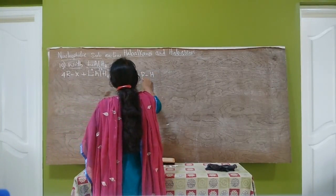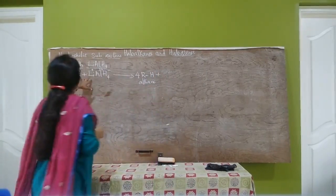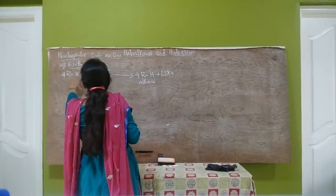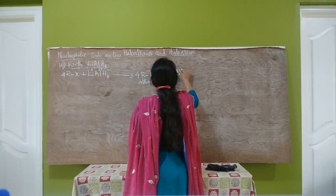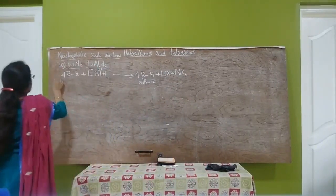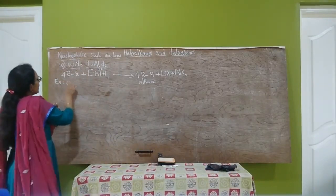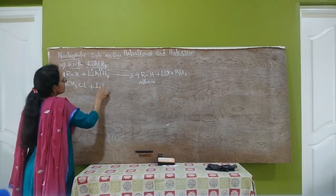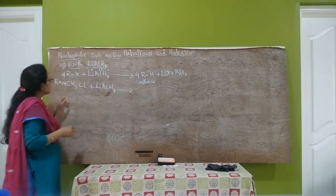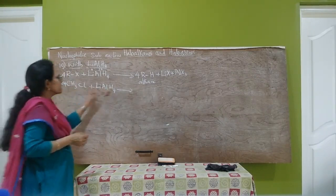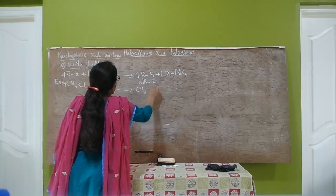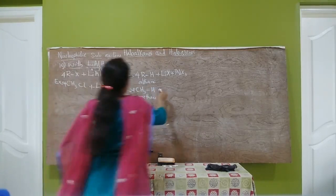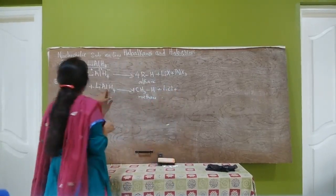The products are 4RH (that is alkane), plus LiX, plus AlX3. For example, 4 molecules of methyl chloride react with lithium aluminium hydride to form CH3H — that is methane — 4 molecules of methane, plus LiCl, plus AlCl3.